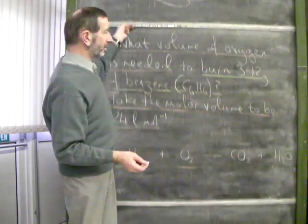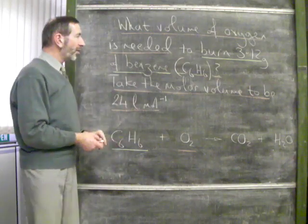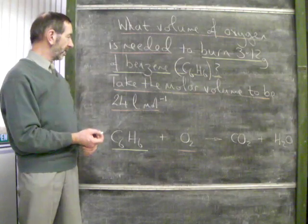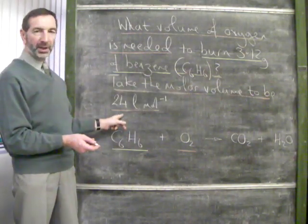Here's a typical question. The question is, what volume of oxygen is needed to burn 3.12 grams of benzene, C6H6? And here we are, we're told that the molar volume of oxygen is 24 litres.